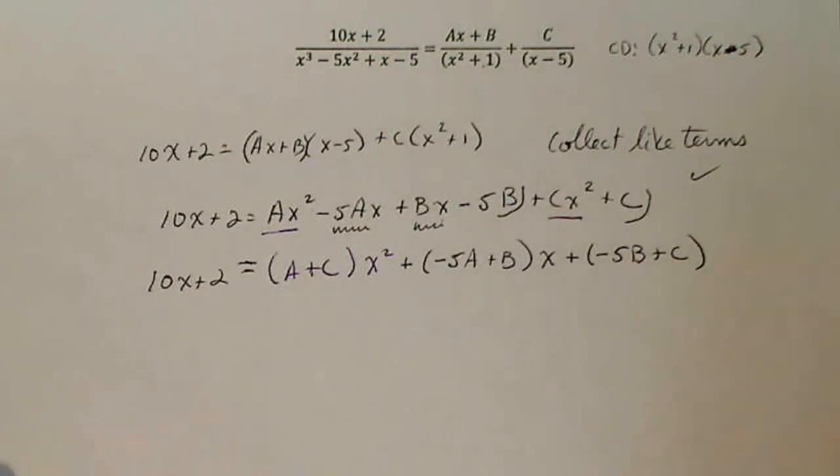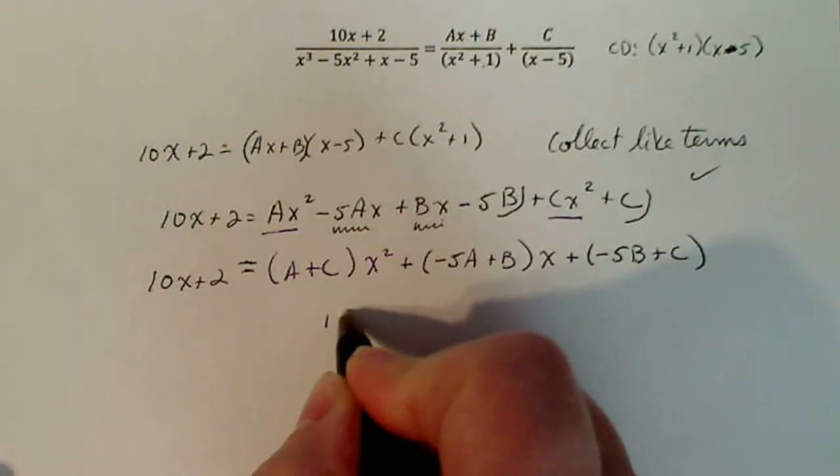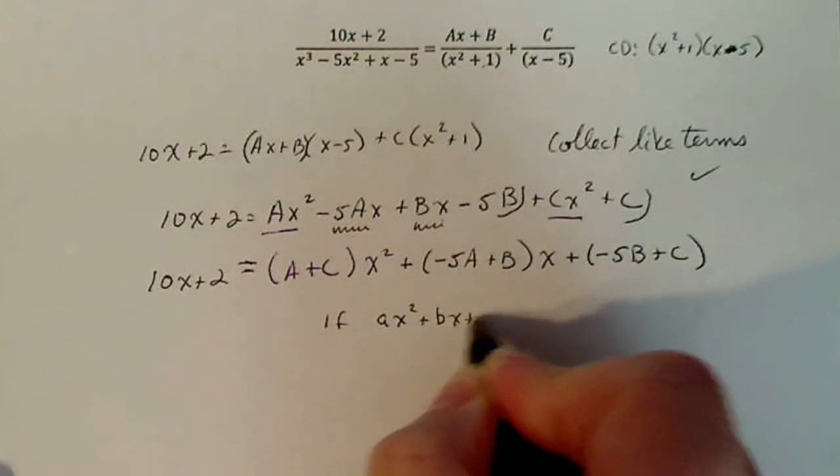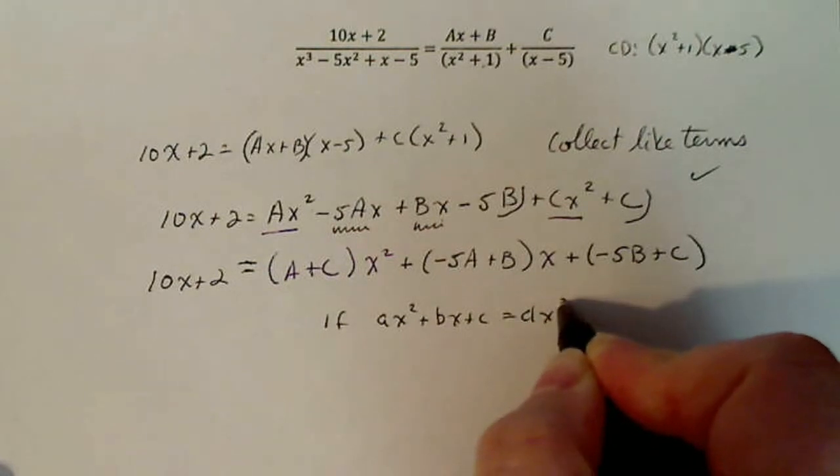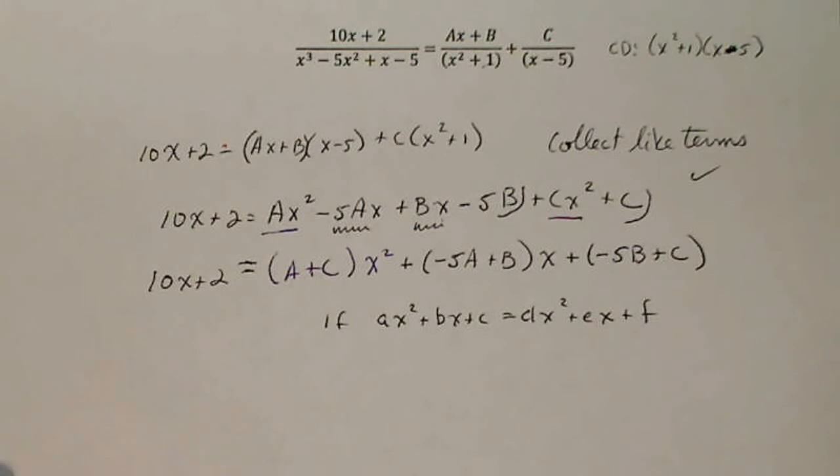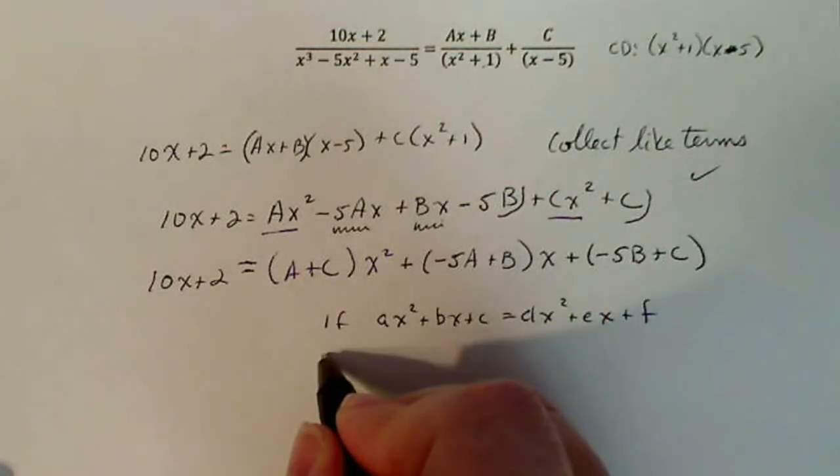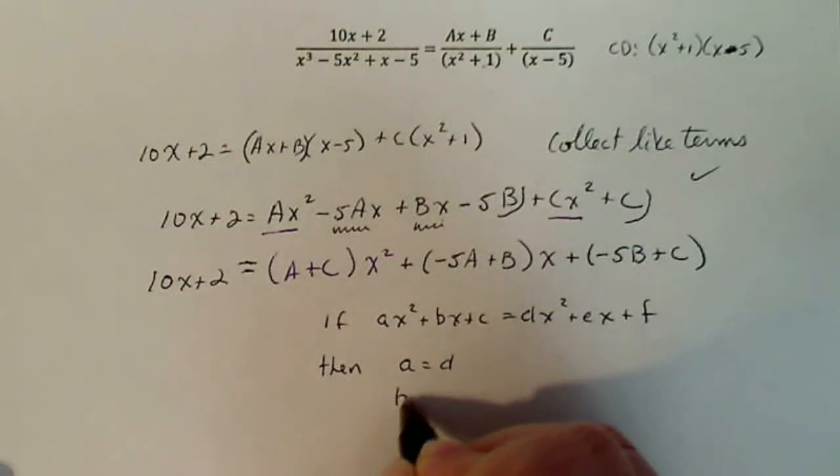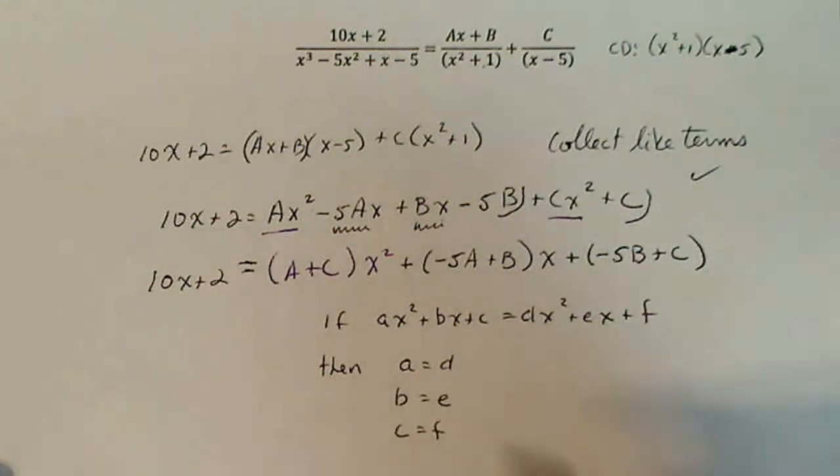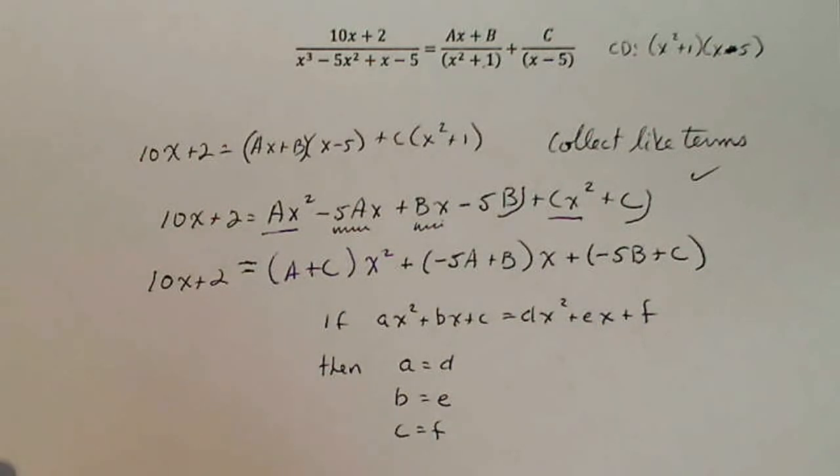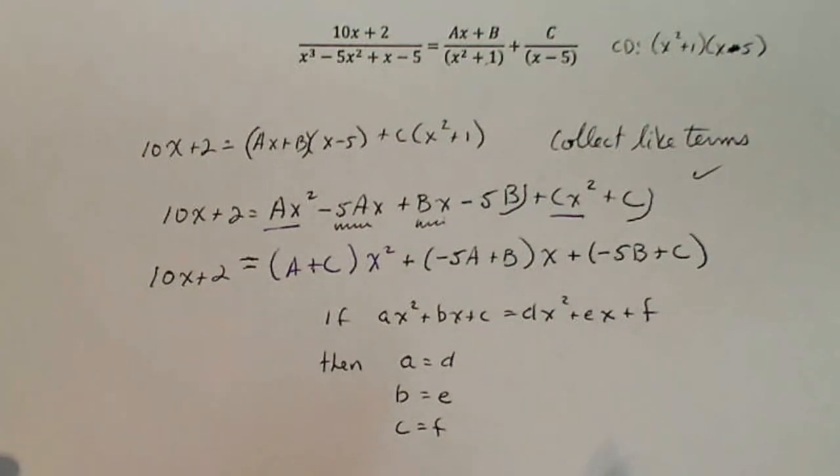So the rule of thumb says that if a x squared plus b x plus c equals d x squared plus e x plus f, what can you say is true? Most people say then a must equal d, b must equal e, and c must equal f. And that's true. If these two guys are the same, the like coefficients have to be the same. It's just a fact of life.